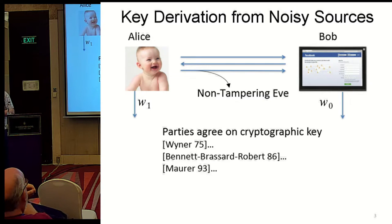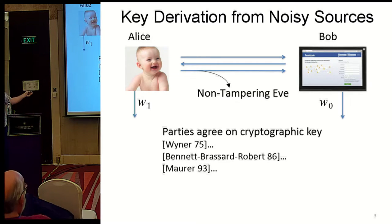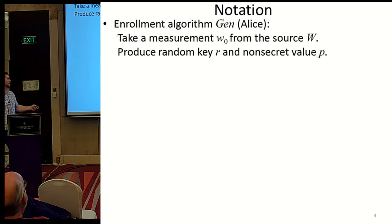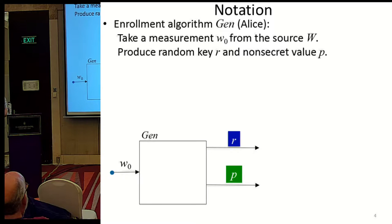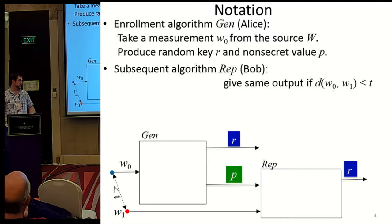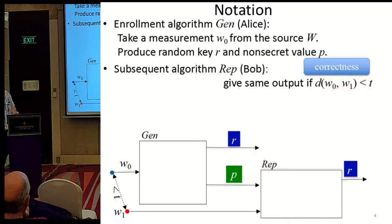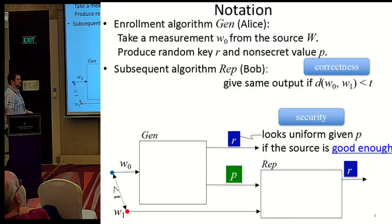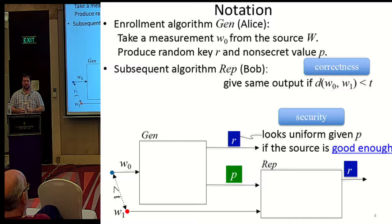This problem and variants of it have been studied for 40 years, starting with the work of Wiener and the Wiener Tap Channel in 1975. Today we consider the non-interactive setting, where there's a single message from Alice to Bob, using the notation of fuzzy extractors. We have an enrollment algorithm called Generate that takes W0 and produces a cryptographic key R as well as a non-secret value P. We then run Reproduce when the distance between W0 and W1 is less than T — it takes W1 and the public value P to recover R. The correctness condition is that Reproduce gives the same key if W0 and W1 are within distance T, and the security condition is that R should look uniform given the public value if the source is good enough.